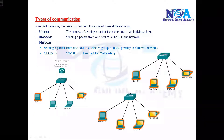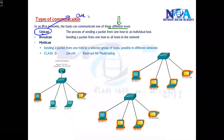The next thing we need to understand is unicast, broadcast, and multicast. In a network, we can have three different types of communications, especially in IPv4. Unicast is one-to-one communication — one device sending a request to another device, like one person talking to another person where only two persons are involved.